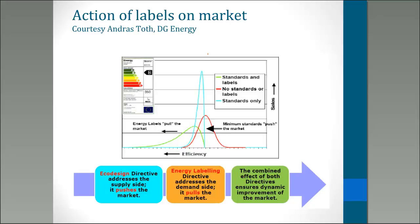This is a graph showing the distribution of sales of products against their efficiency. The initial market is the red graph. If you add standards, you cut off the bottom, forming the blue graph. And if you add labels, ideally you encourage the more efficient products and get this pull of the market. In the EU, the Eco Design Directive provides minimum energy performance standards that cut off the worst products.